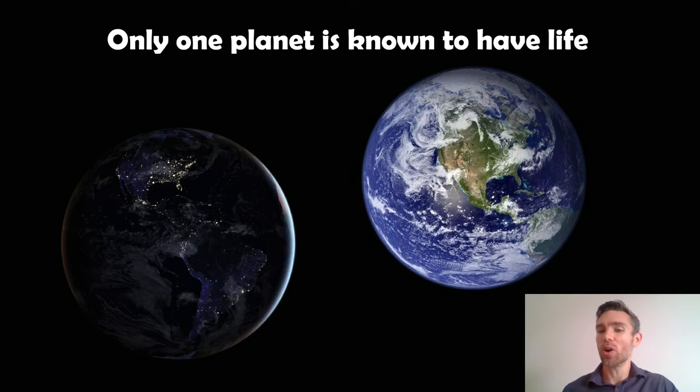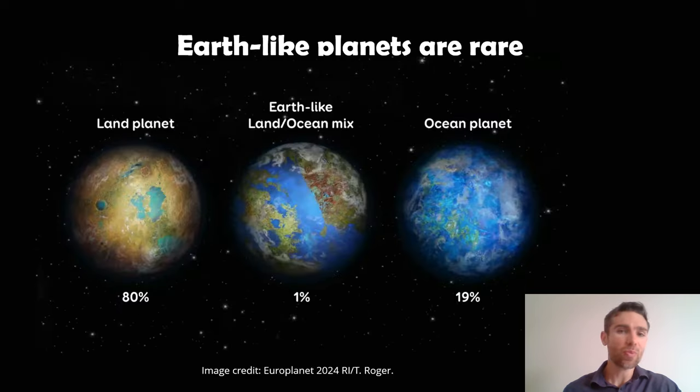Now the first thing that's probably worth noting is Earth is the only place or planet or location that we know that has life. There are some interesting hints on other planets, maybe even some moons around other planets that might suggest there is life there, but there's nothing definitive about it yet. So Mars has some interesting things going on. There's some exoplanets that James Webb has been looking at that have some interesting things going on. But for now, the only place we really know that definitively has life is Earth.